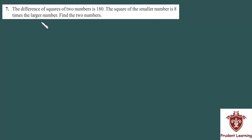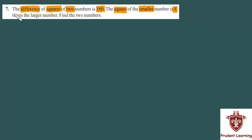Let us see the seventh question. The question is: the difference of squares of two numbers is 180. The square of the smaller number is 8 times the larger number. Find the two numbers.